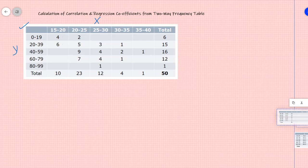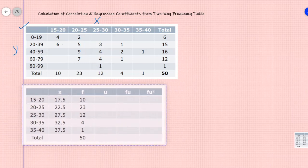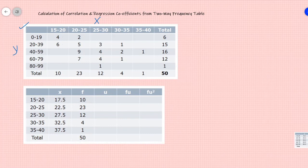First, I have defined x. The class interval for x is 15 to 20, 20 to 25, 25 to 30, 30 to 35 and 35 to 40. So first I have calculated mid-value for each class. 15 plus 20 by 2 is 17.5 and similarly we have calculated till 35 to 40 it would be 37.5. So this will be the frequency for variable x: 10, 23, 12, 4 and 1.